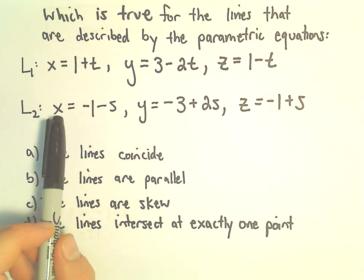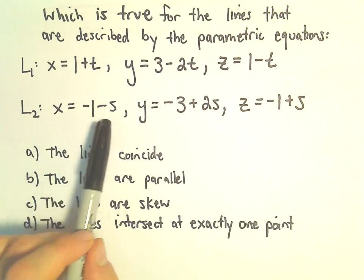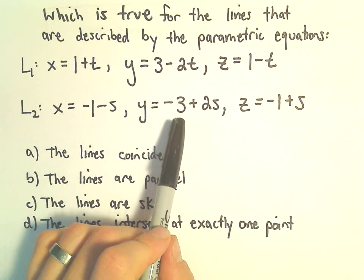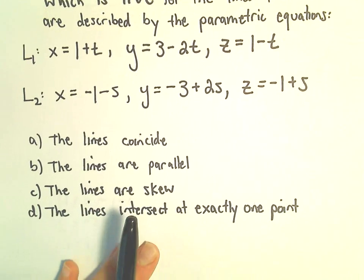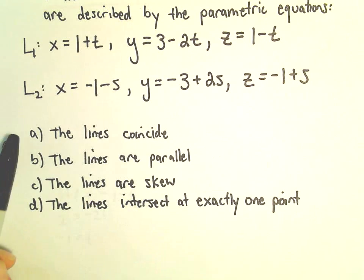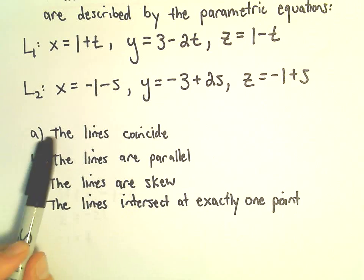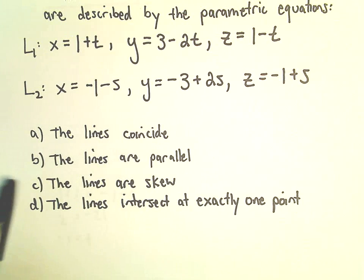Our second line can be described by x equals negative 1 minus s, y equals negative 3 plus 2s, and z equals negative 1 plus s. We want to know, do these lines coincide? Are they parallel, are they skew, or do they intersect at one point?